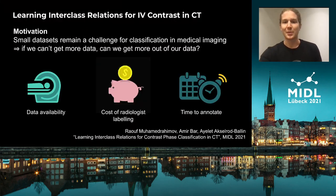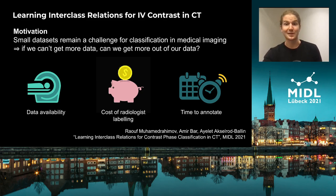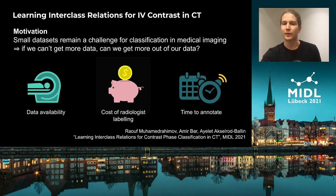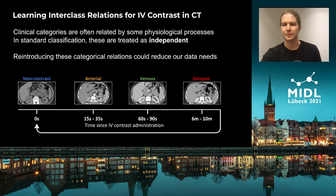Now, despite our best efforts, one of the most common challenges we face in medical imaging is a limitation on the size of our datasets, particularly in the classification setting. If we're unable to get more labeled data, it's worth considering how we can formulate our tasks to get more out of our data. Clinical findings are often represented categorically, and these are usually the easiest labels to acquire in large amounts, which is why we're often dealing with these classification tasks.